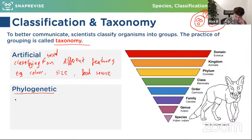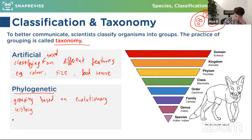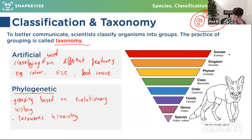Phylogenetic classification groups organisms based on evolutionary history — if they shared a more recent common ancestor, they're more closely related and grouped together. We call this the taxonomic hierarchy. The eight levels are: domain, kingdom, phylum, class, order, family, genus, species. There are lots of mnemonics to remember the order — whichever one you use is fine as long as you get the order correct.